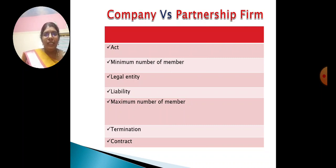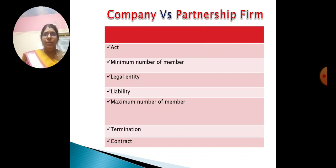Next: Legal Entity. A partnership firm does not have a legal entity, but a company, once incorporated, has a separate legal entity. Liability: In a partnership firm, the liability of the partners is unlimited, but in a company, members' liabilities are limited.